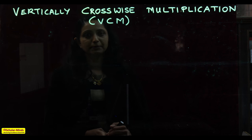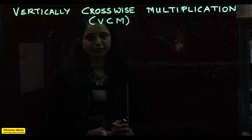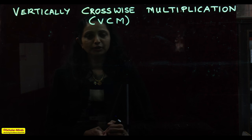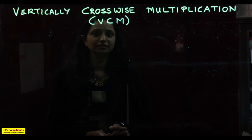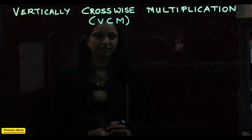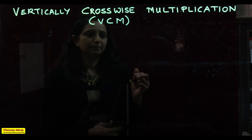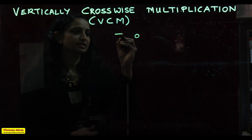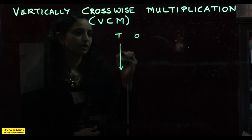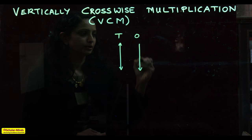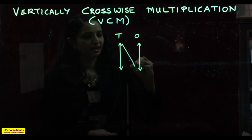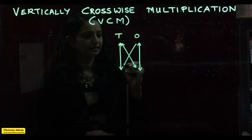Now we look at multiplication of 2-by-2 digits. The only difference here is that we are carrying forward a value from the ones place to the tens place. We keep in mind this method where you have the ones and tens: vertically multiply the ones and tens place digits separately, then cross multiply and add them.